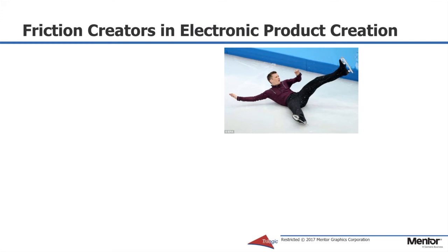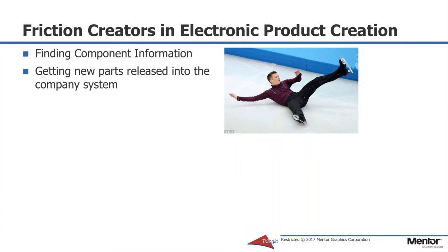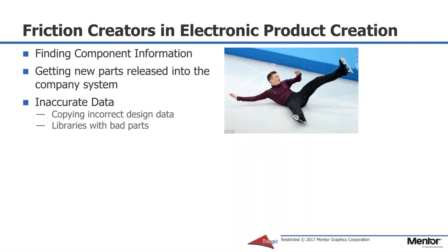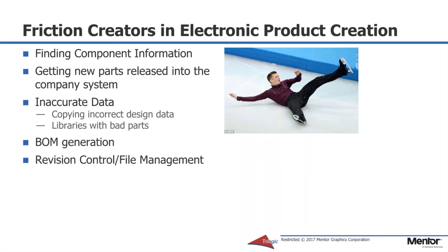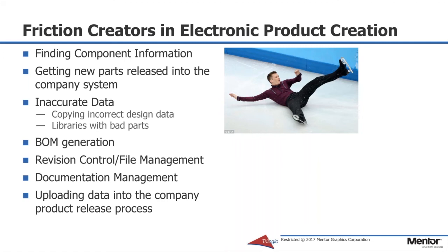There are many friction creators in the electronic product creation process. For example, just finding the component information — we need to be able to make intelligent design decisions about which components to use and get these new parts released into a company system. You might have inaccurate data; data may be obtained by someone then copied over and over again, sometimes resulting in libraries with bad part information. Bill of materials generation is always a problem, making sure that the BOM is correct. Often some system of version control or file management is also needed. Document management is always a difficulty — where are the documents kept? In addition, how is all the data created in the design process uploaded into your company product release system? And lastly, collaboration and manufacturing partners. These all can create friction during electronic product creation, and we're going to talk about some ways you can simplify the process and maybe get a little closer to frictionless.